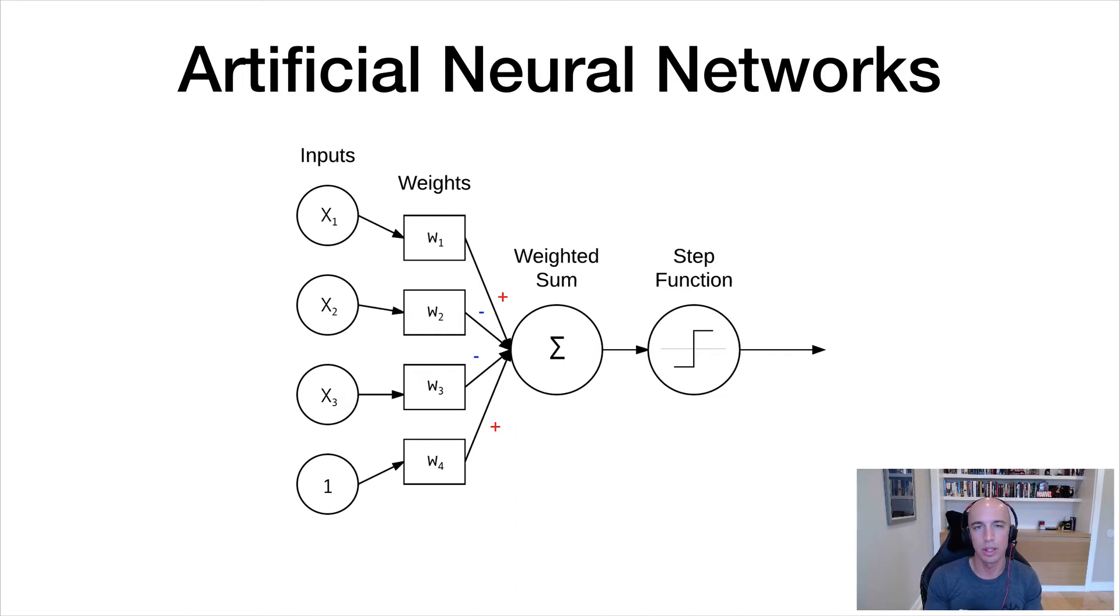This step function is equivalent to your activation function. You're going to have this weighted sum coming into it. And if this weighted sum is not large enough, then this step function is not going to activate and the output's going to be zero. But if you have a sufficiently large sum coming in, then the step function is going to hit that critical threshold, bounce up to one, and then that neuron will be considered activated.